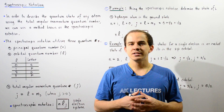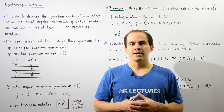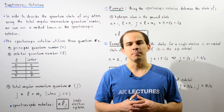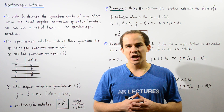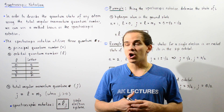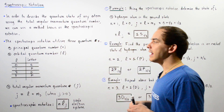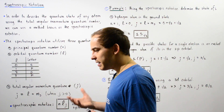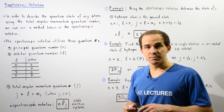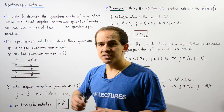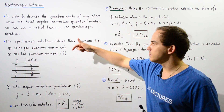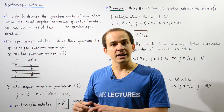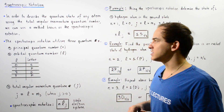In order for us to be able to describe the quantum state of any atom using the total angular momentum quantum number given by lowercase j, we can use a method known as spectroscopic notation. The spectroscopic notation utilizes three quantum numbers. The first is the principal quantum number given by lowercase n, which is a positive integer that begins with 1 and increases by increments of 1.